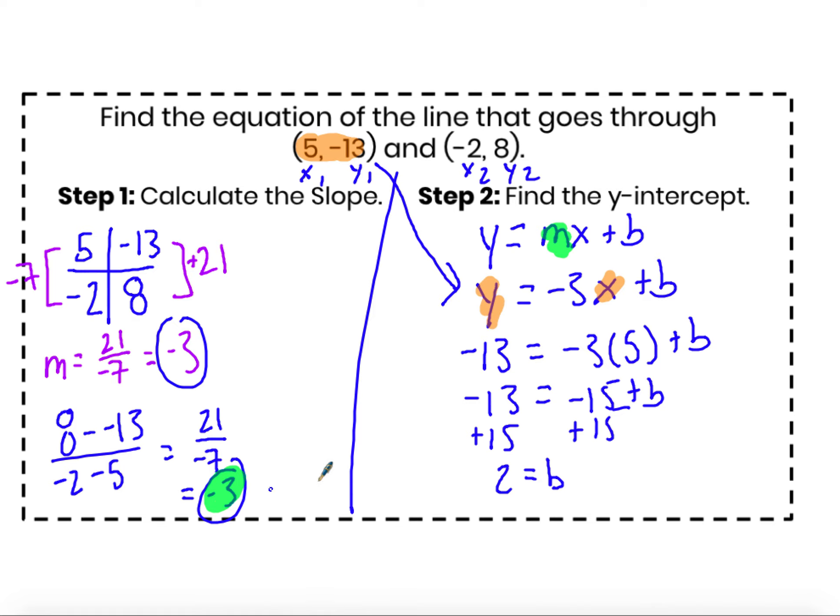I now have the rate of change and the start value, the slope and the y-intercept, 0 comma 2. So my linear equation through the points 5, negative 13 and negative 2, 8 is y equals negative 3x plus 2.